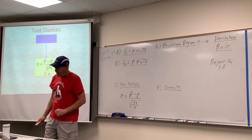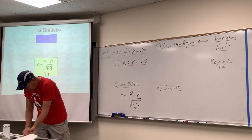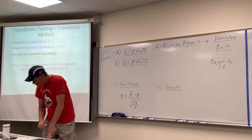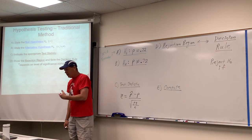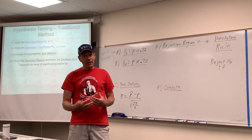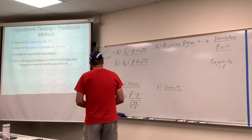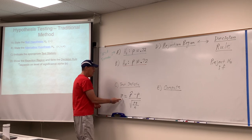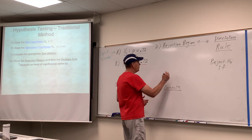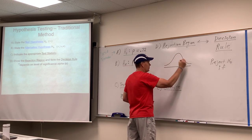When we get into the rejection region and decision rule, this all depends on the level of significance. The test statistic involves Z, so the rejection region is a picture — our standard normal bell curve with zero in the middle. A hypothesis test is a lot like a court case: the null hypothesis is being put on trial, and we're going to assume it is true, giving it the benefit of the doubt.